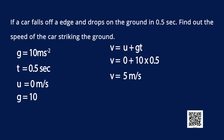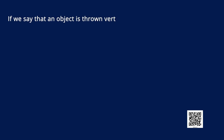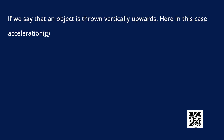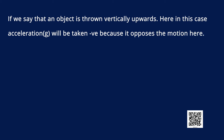Similarly, if an object is thrown vertically upwards, in this case acceleration will be taken as negative because it opposes the motion, so we will take the value of small g as negative.